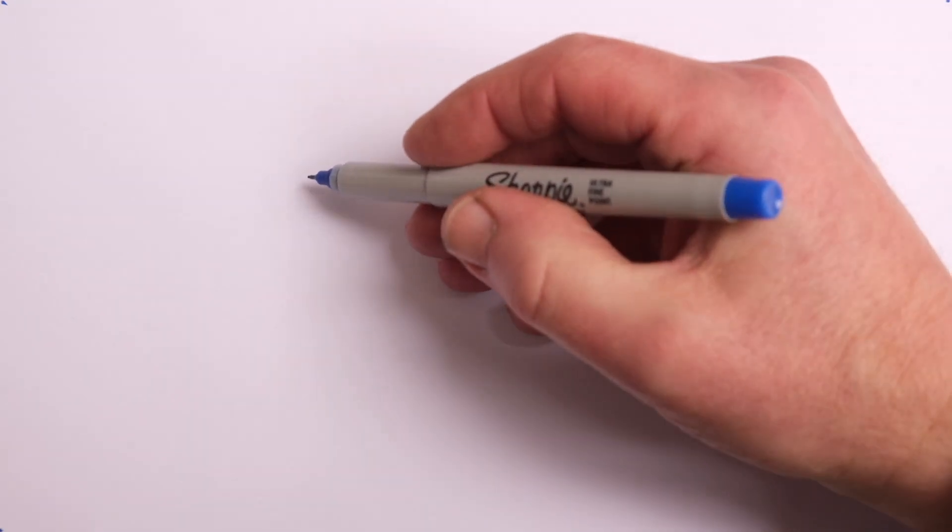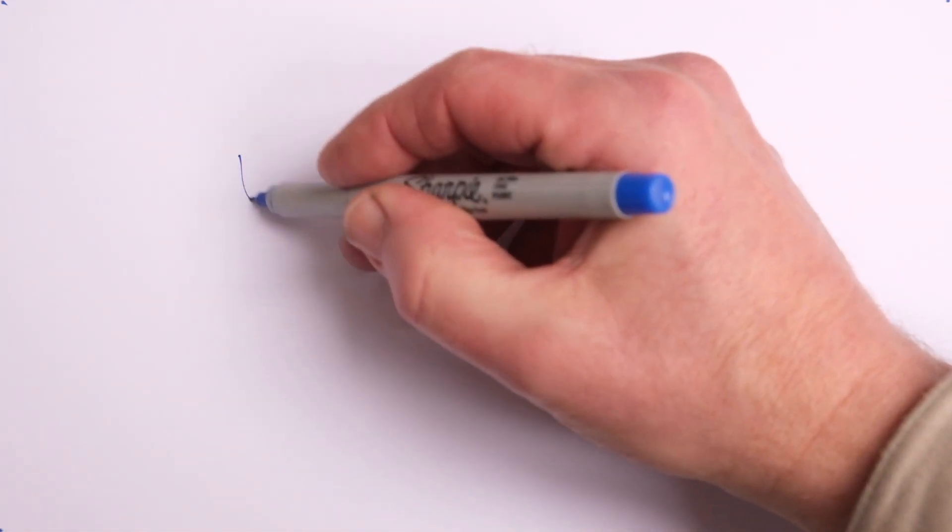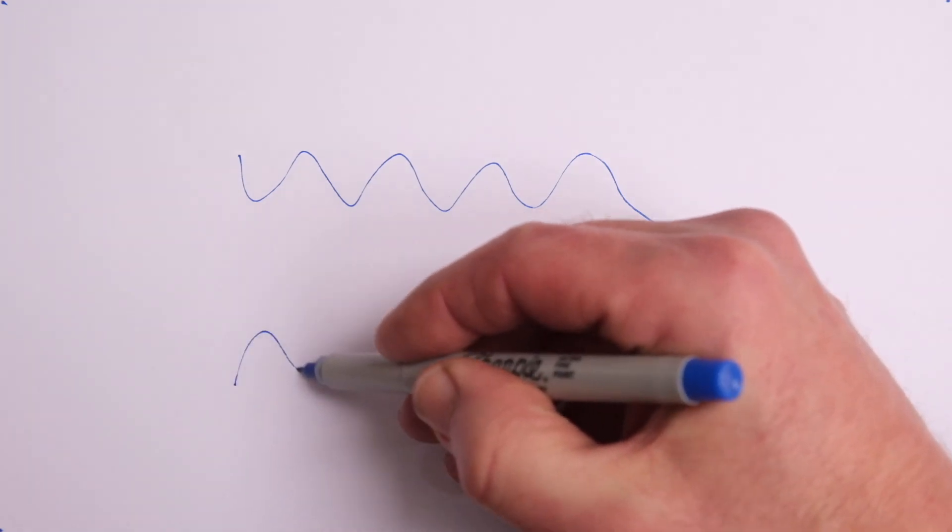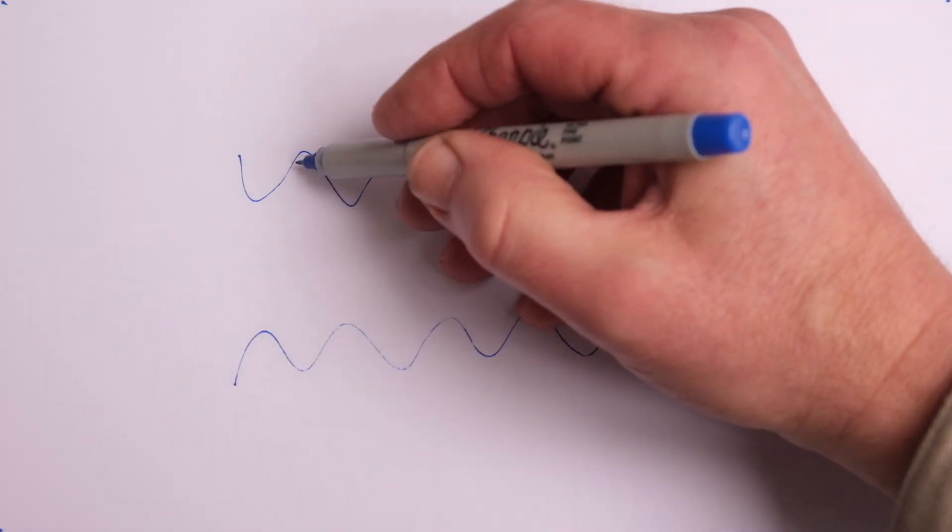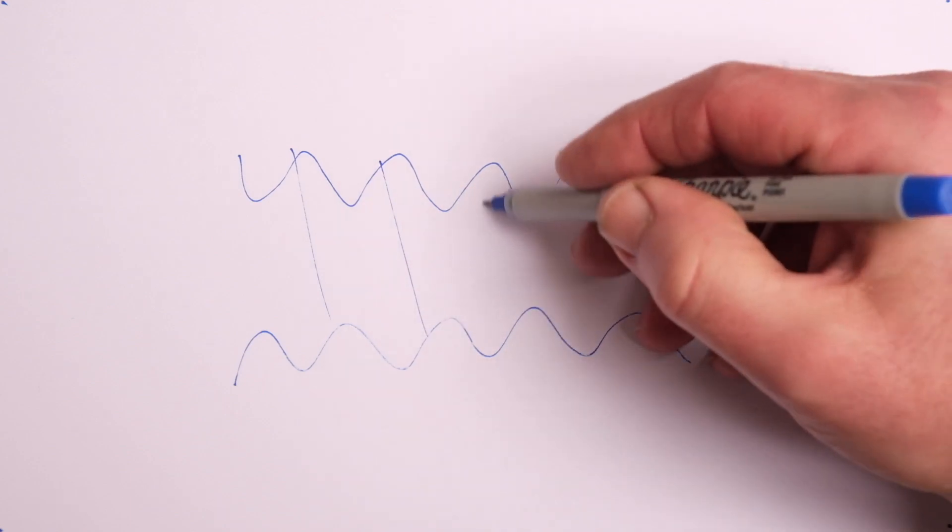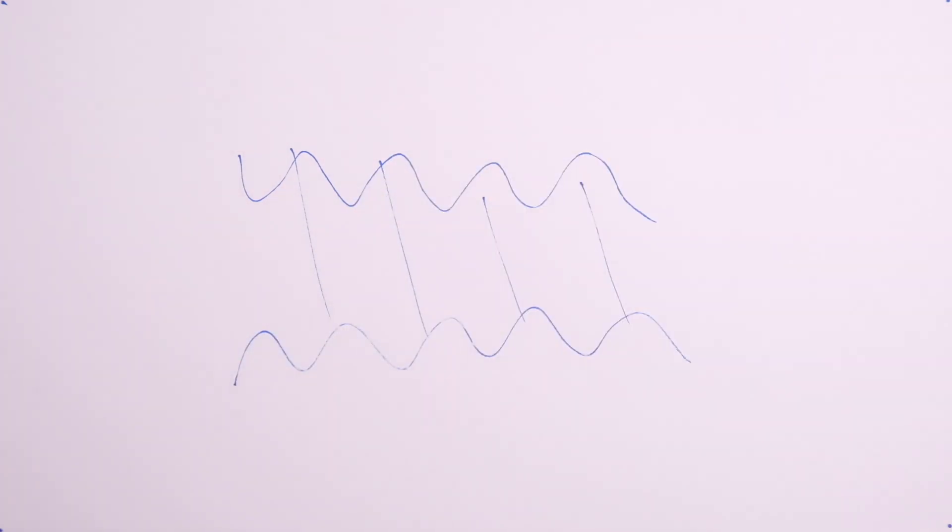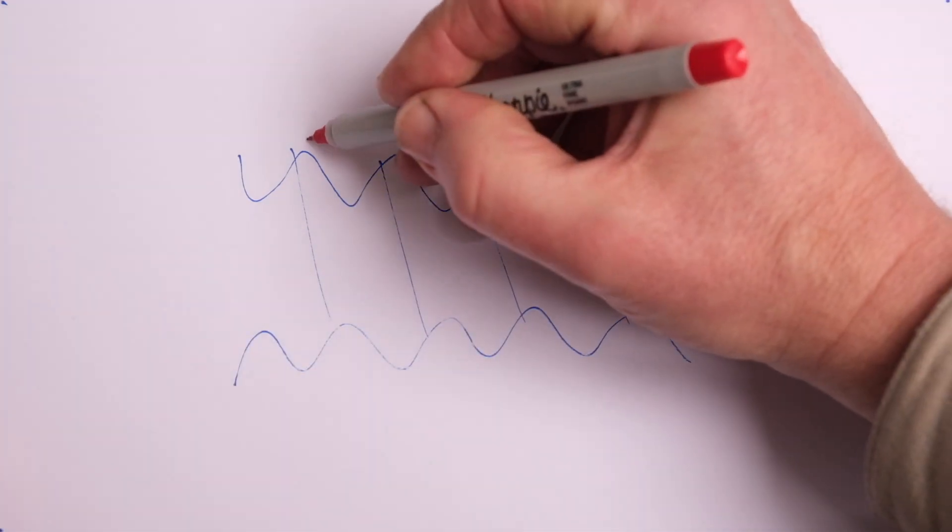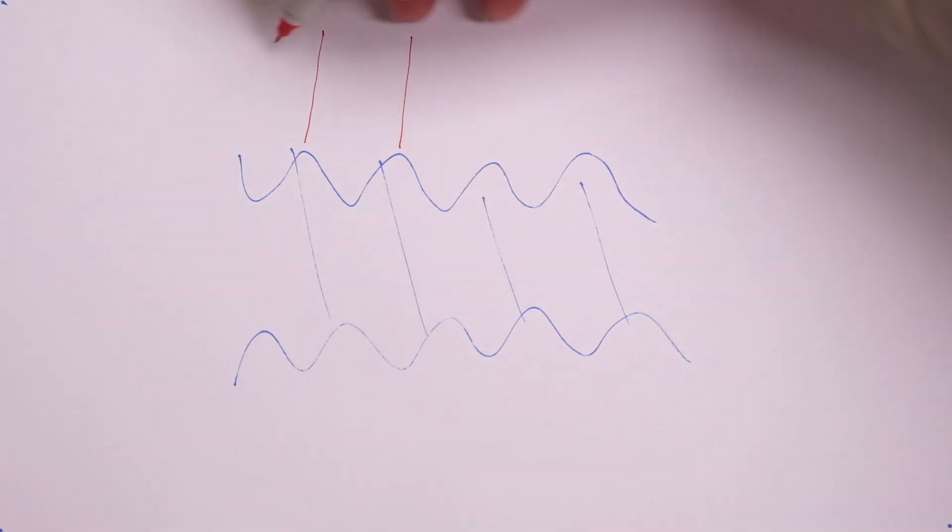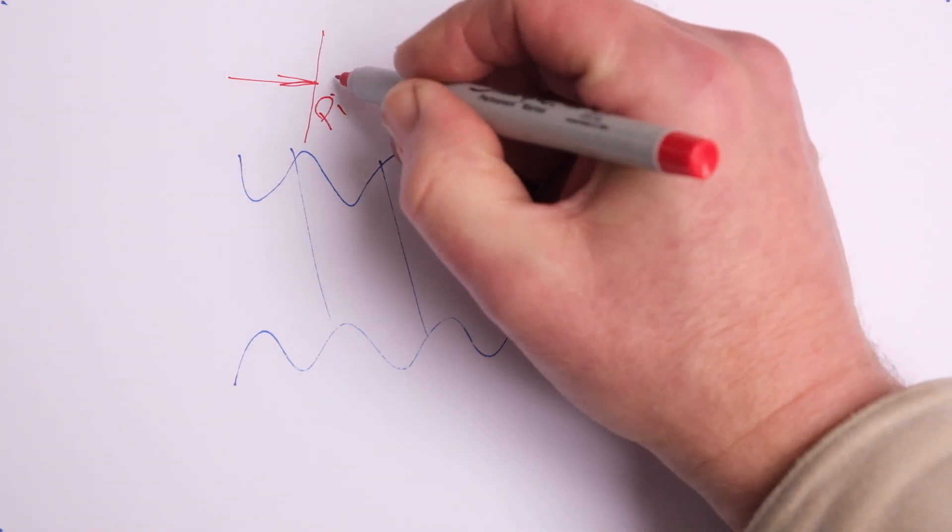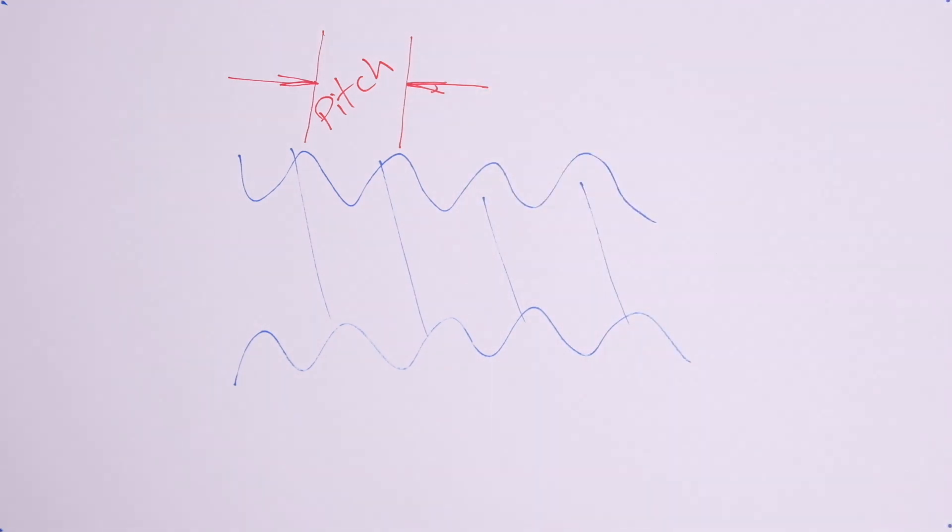When we look at our thread nomenclature there are a couple of values that are particularly important to us. Here is a section of a thread, right hand thread, and the primary value that's of interest to us in matching threads is pitch. That is the value between one crest and the next crest or one root and the next root of the thread and this is either expressed as a fraction of a millimeter typically or as TPI which is threads or turns per inch value.